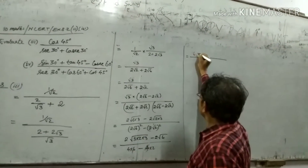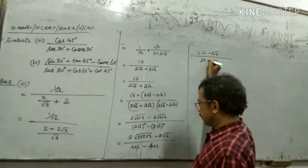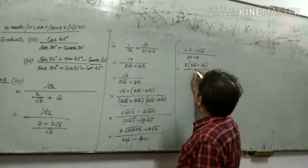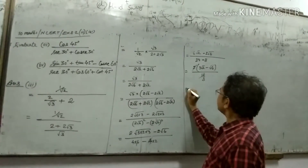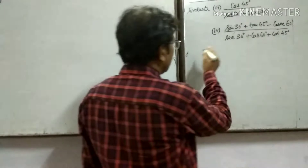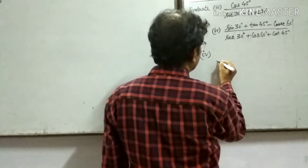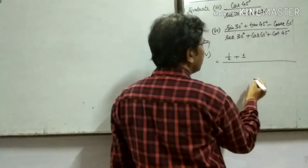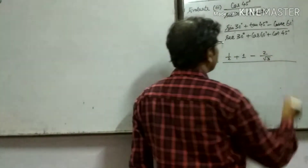3 root 2 minus 2 under root 6. 2 root 2 minus 2 under root 6 divided by 16. 3 root 2 minus 2 under root 6. 3 root 2 minus root 6 upon 8.